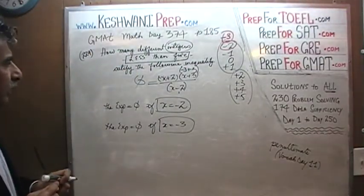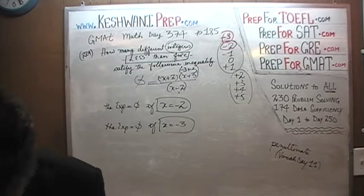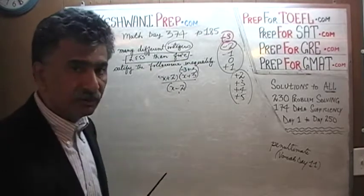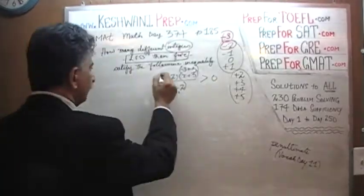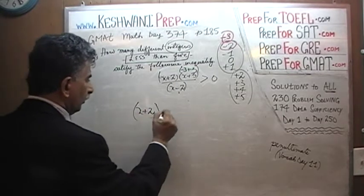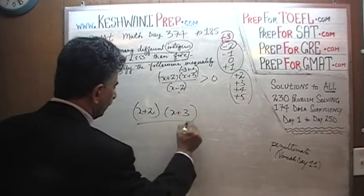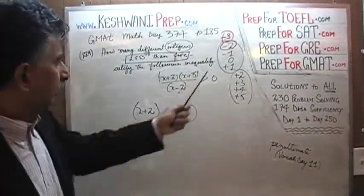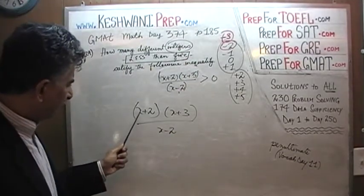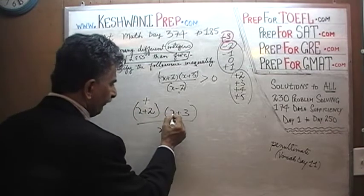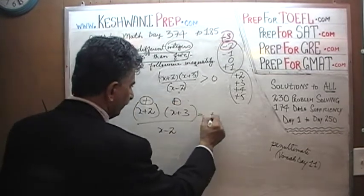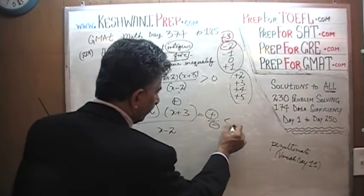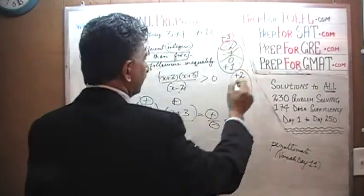Now we need to check negative 1 and all the others where the expression might be positive. If x is negative 1, then x+2 is positive and x+3 is also positive, so the numerator is positive times positive, which is positive. But x−2 gives negative 1 minus 2, which is negative. So positive divided by negative is less than zero. Negative 1 does not work.